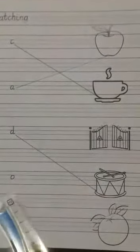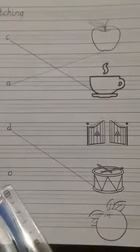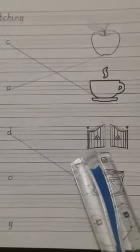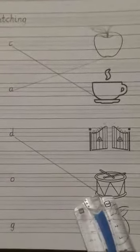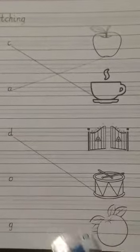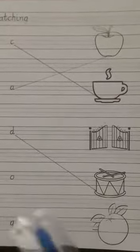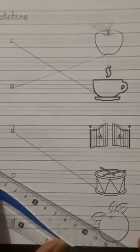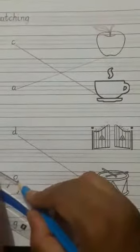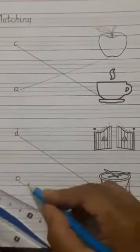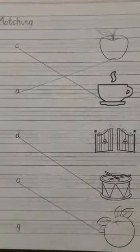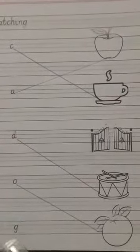Our next sound is O. So set the ruler and match O with orange.